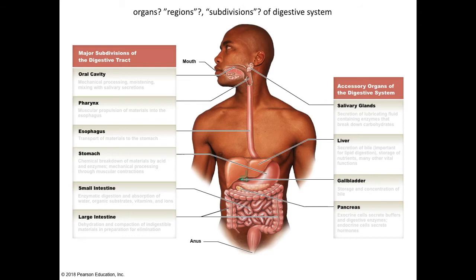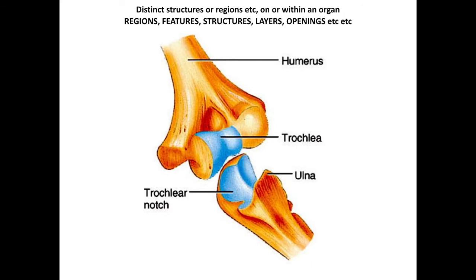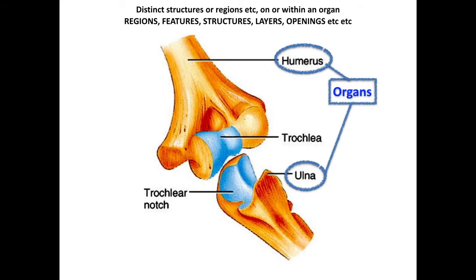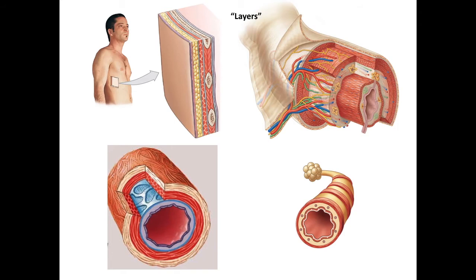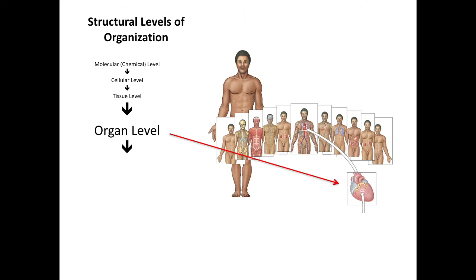On any given organ there are going to be distinct regions, features, structures, layers, openings, etc. that you'd have to identify or explain. For instance, here are two organs — the humerus and the ulna bones — and on those bones you have very distinct features that play an important role in their function. Another major concept is that many organs or regions, and really your whole body, is composed of and organized by layers of different tissues. Identifying those layers within a different part of the body is a big part of the class.